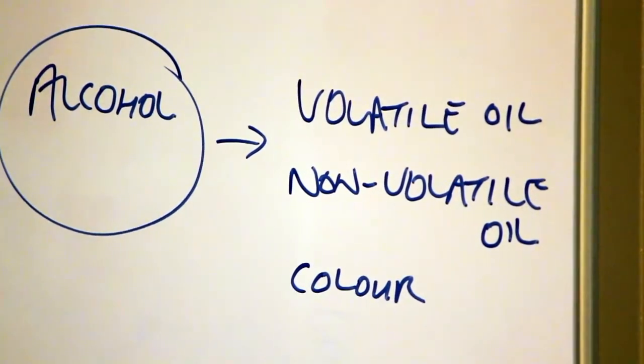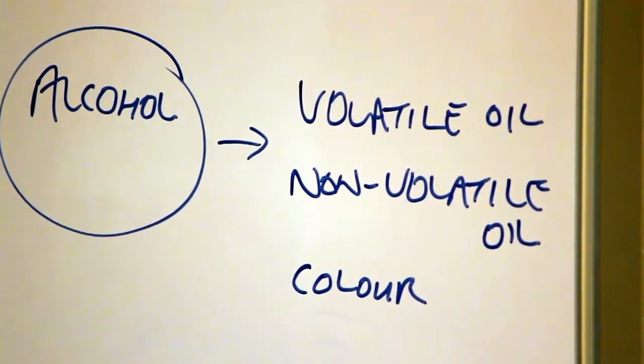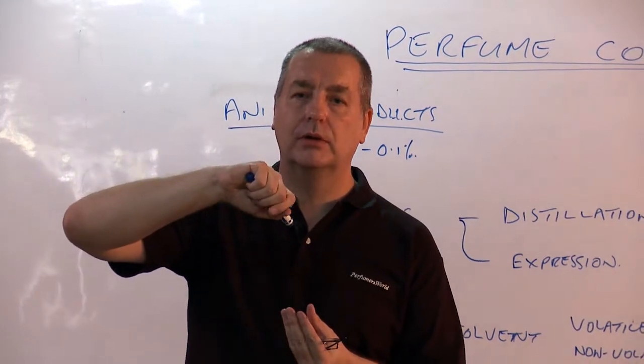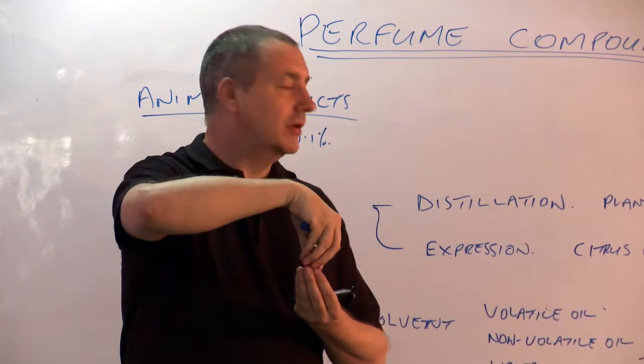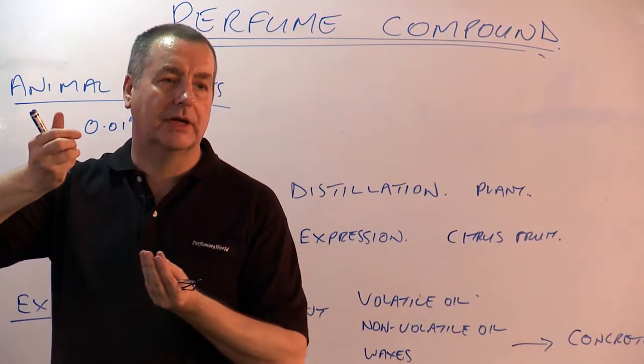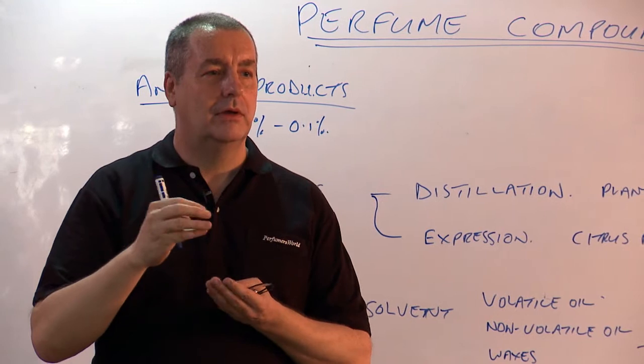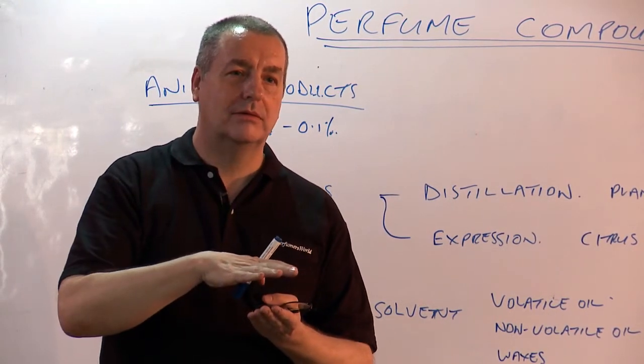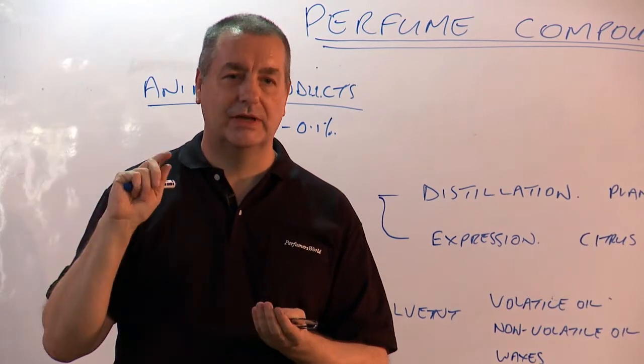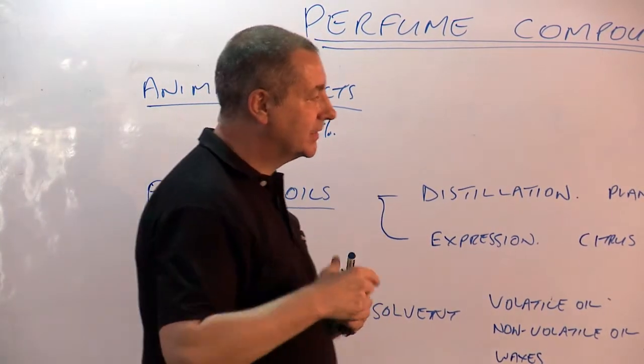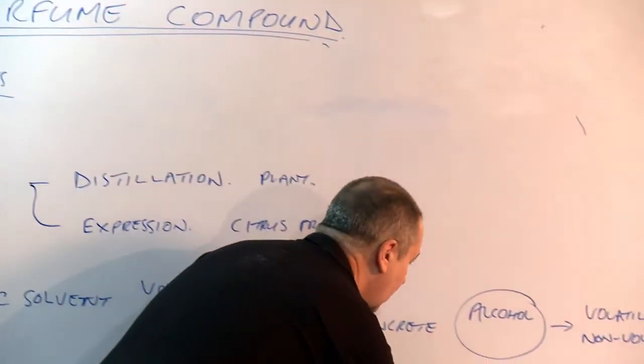So if we get this concrete, we warm it slightly. We pour alcohol on top. As we stir it, these three items, the volatile, non-volatile and colour, move into the alcohol and the waxes fall out. And then we take the juice off, evaporate off the alcohol. This gives us a product called an absolute.